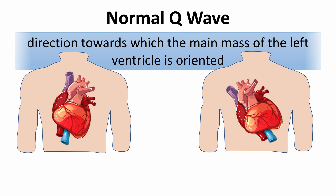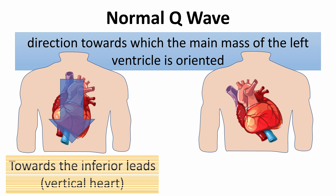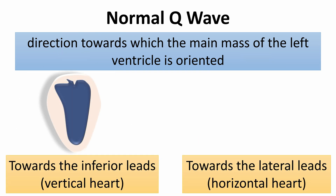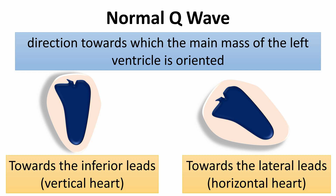If the left ventricle is directed towards the inferior leads, that means the heart is a vertical heart, and Q waves appear with a negative wave in leads 2, 3, and AVF. If it is directed towards the lateral leads, that means the heart is a horizontal heart, and Q waves appear with a negative wave in leads L1, AVL, V5, and V6.